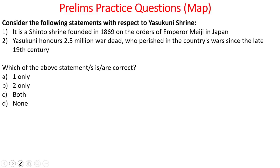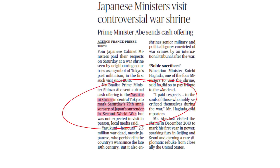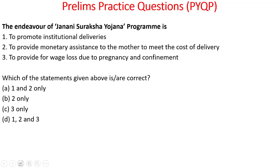Now let's look into the next practice question. Consider the following statements about Yasukuni Shrine: One — It is a Shinto shrine founded in 1869 on the orders of Emperor Meiji in Japan. Two — Yasukuni honors 2.5 million war dead who perished in the country's wars since the late 19th century. Which of the above statements are correct? The answer is both. Kindly remember, Yasukuni Shrine is in central Tokyo, Japan. It becomes very important because on Saturday, the 75th anniversary of Japan's surrender in the Second World War took place. Next practice question: The endeavor of the Janani Suraksha Yojana program is — one, to promote institutional deliveries; two, to promote monetary assistance to the mother to meet the cost of delivery; three, to provide for wage loss due to pregnancy and confinement. Which statements are correct? The answer is 1 and 2, because the third statement is wrong.